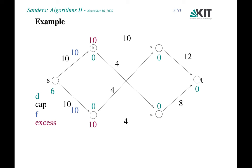Both outgoing edges from the chosen node are horizontal, so we cannot push along them. We do a relabel, incrementing distance to one, which makes both edges eligible. We perform a saturating push along one chosen edge, which also deactivates this vertex. Next, we choose the other active vertex, which also has a horizontal edge problem, so we relabel it first, then perform a non-saturating push — this edge had capacity 12, so we push 10 units and deactivate the vertex.